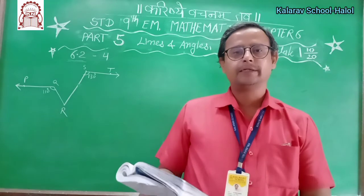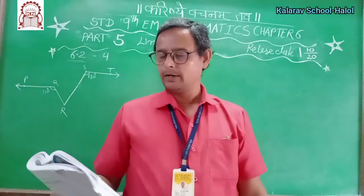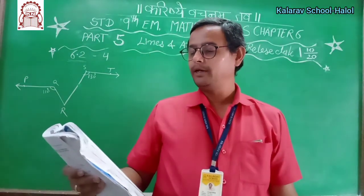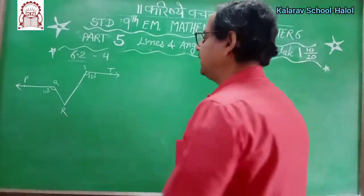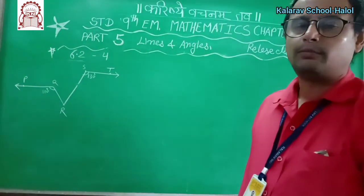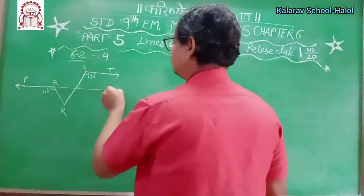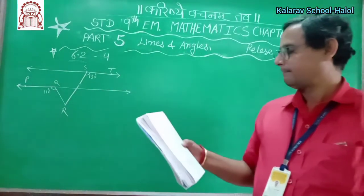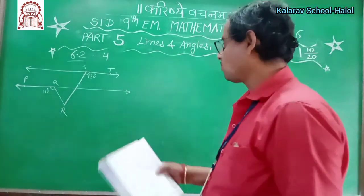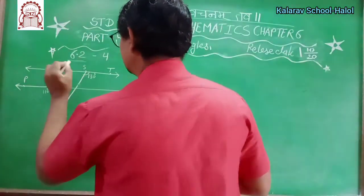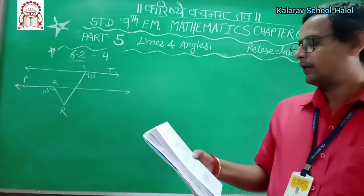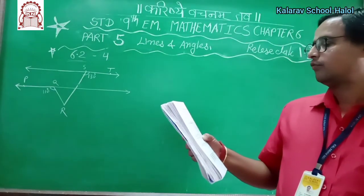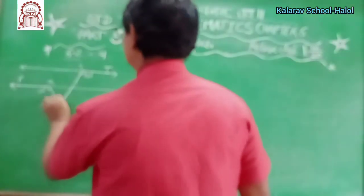Check it out, use your mind because it is easy — that's why I have kept the third sum for you. Now see the fourth one. PQ is parallel to ST. Angle PQR is 110 degrees and angle RST is 130 degrees. Find angle QRS.